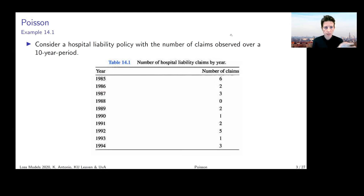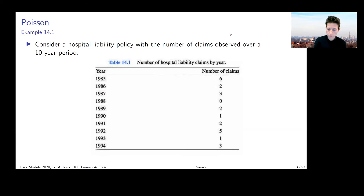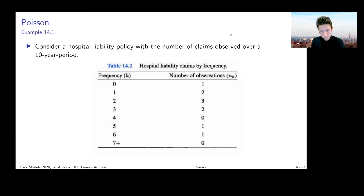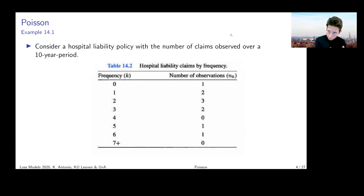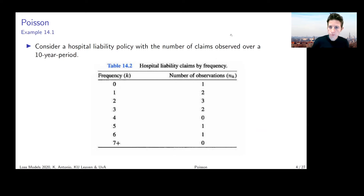In a particular year — 1985, for example — our policy filed six claims, and so on. So we have a single policy followed over a period of 10 years, and we look at the yearly number of claims reported. We can also write this table in a different way: for the different frequencies observed, going from zero up to seven or more, we can list how many years we observe with that particular number of claims reported.